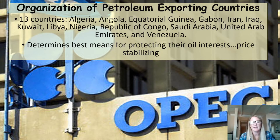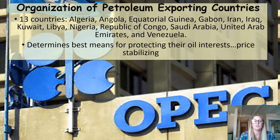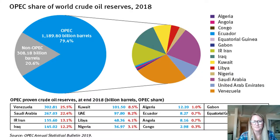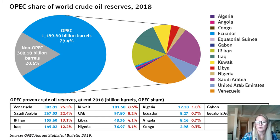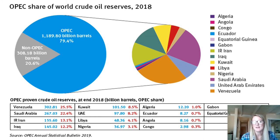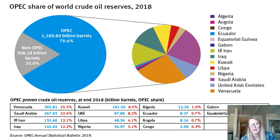OPEC works to stabilize oil prices — they work together to set the price of oil and then sell it to different countries. They contain quite a bit of the world's crude oil reserves. As you can see in this pie chart, OPEC controls about 80% of the world's oil, leaving about 20% for non-OPEC nations.